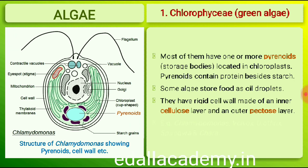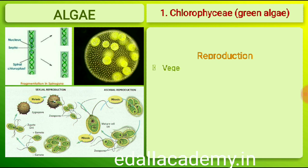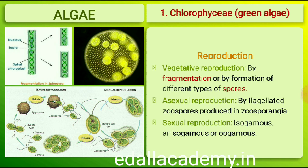Most members have one or more storage bodies called pyrenoids located in the chloroplasts. Pyrenoids contain protein besides starch; some algae may store food in the form of oil droplets. Green algae usually have a rigid cell wall made of an inner layer of cellulose and an outer layer of pectose. Vegetative reproduction usually takes place by fragmentation or by formation of different types of spores. Asexual reproduction is by biflagellated zoospores produced in zoosporangia. Sexual reproduction may be isogamous, anisogamous or oogamous.